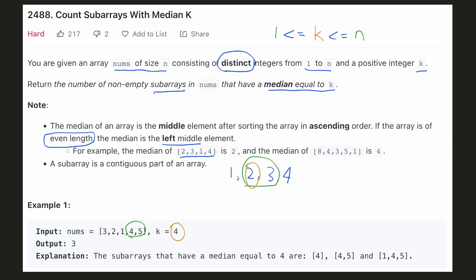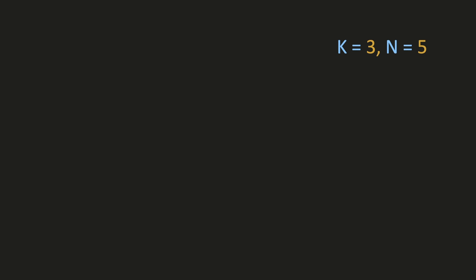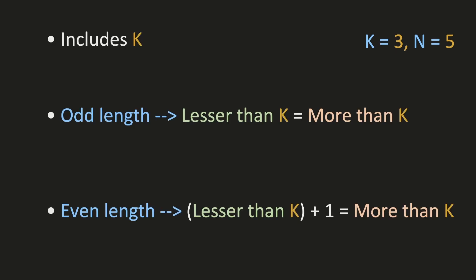Let's try to come up with an intuitive solution. Let's understand which subarrays will have k as the median by looking at a small example where the median has to be 3 and the total number of elements is 5. For any subarray to be valid, we have to check three properties. First, k definitely has to belong to that subarray — k must be included. A subarray which does not include k can never have k as the median, so it is invalid.